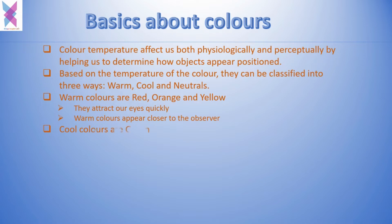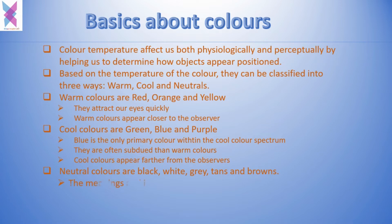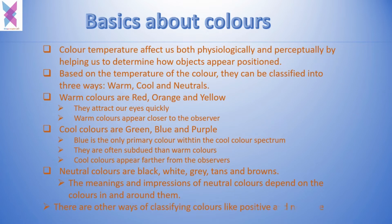Cool colors are green, purple, and blue. Blue is the only primary color within the cool color spectrum. They are often subdued with warm colors, and cool colors appear farther from the observer. Neutral colors are black, white, gray, tans, and browns. The meanings and impressions of neutral colors depend on the colors in and around them.